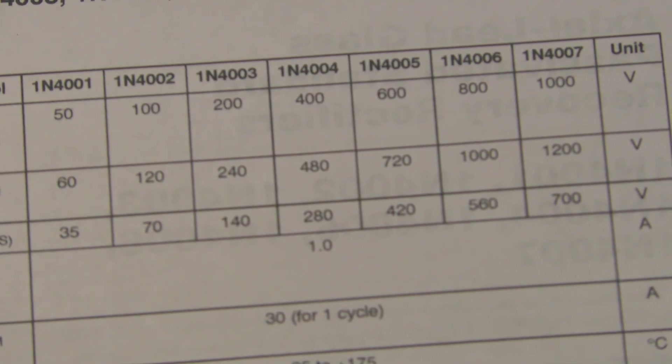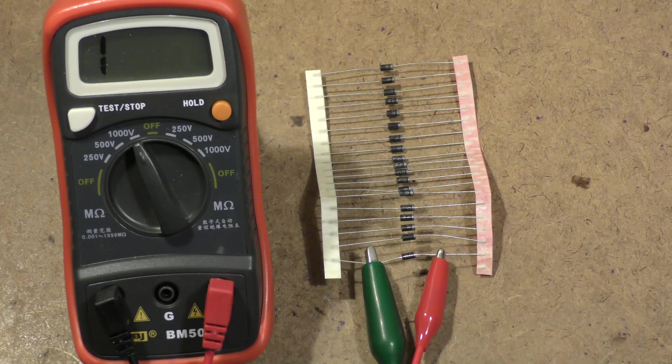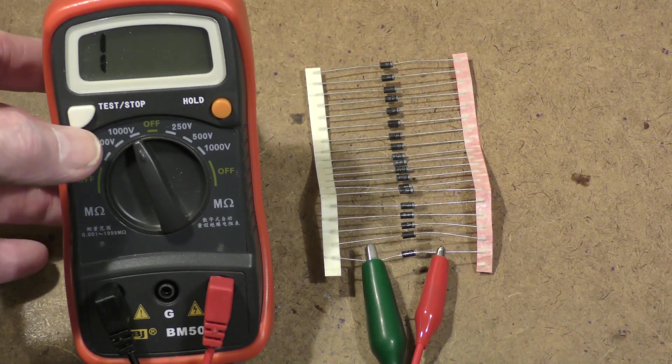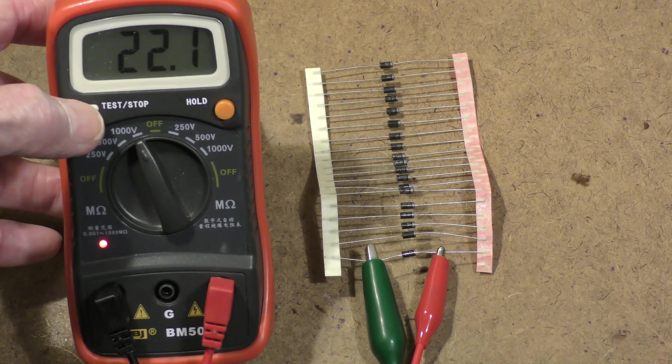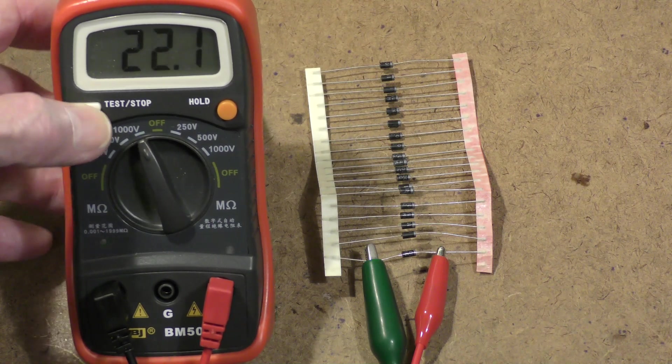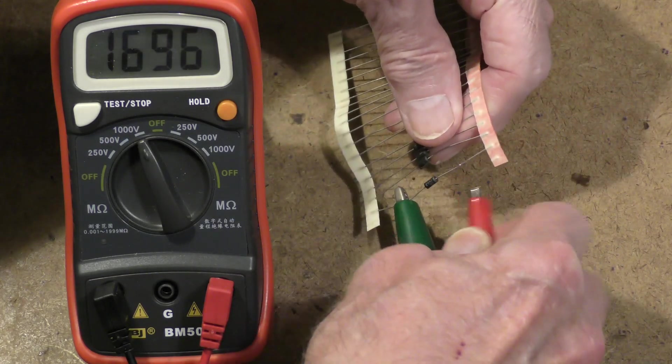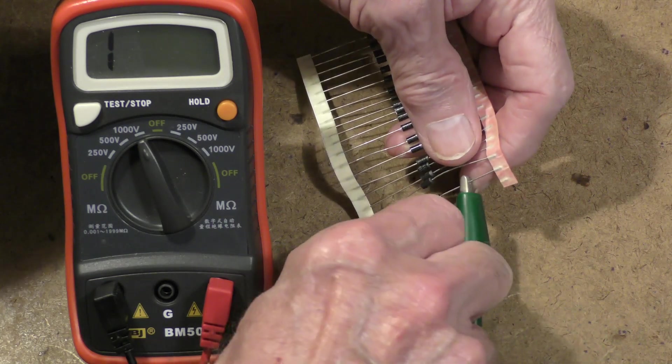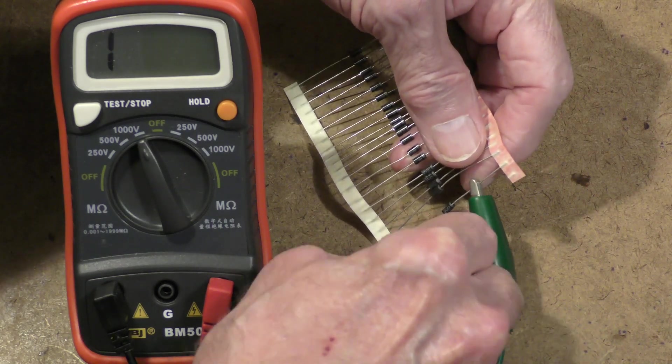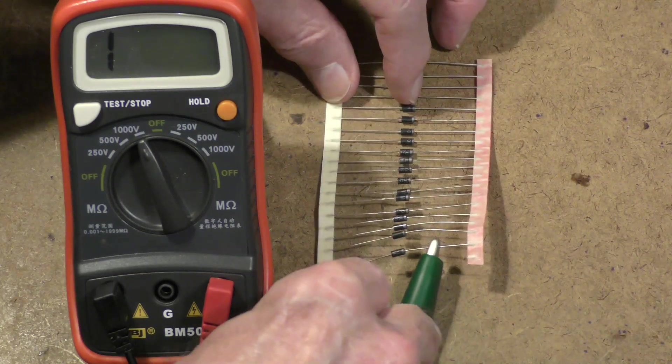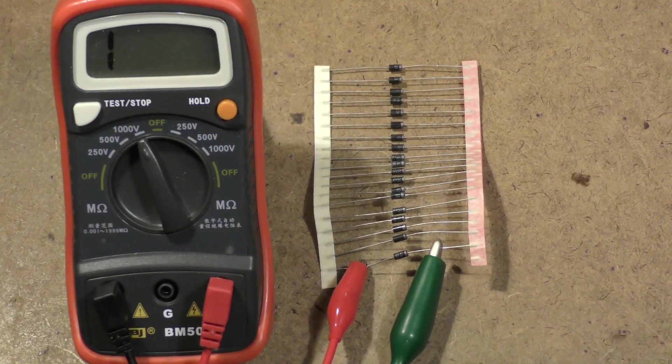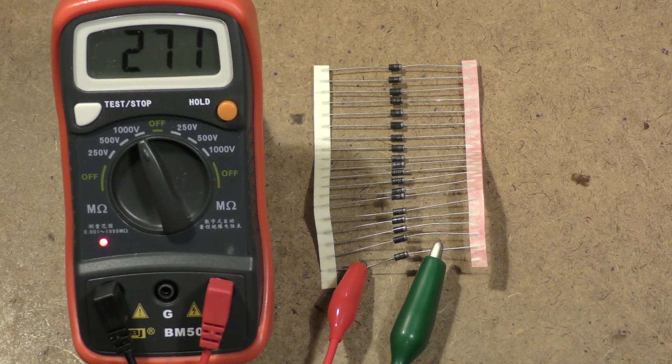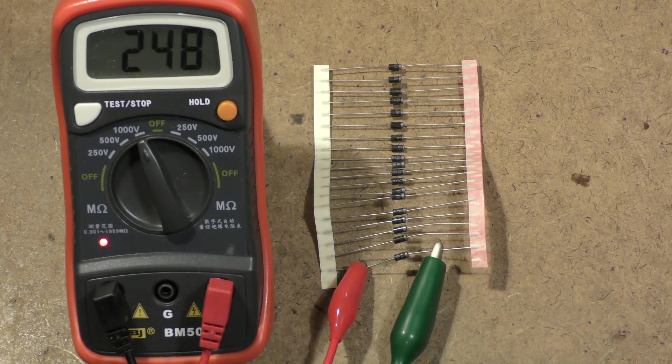Before I go to the diode on the other end, let's just redo this one. This is the forward, 22 megohms. Now on camera I'm going to reverse these so you'll see there's no trick photography here. Reverse: 250 megs.